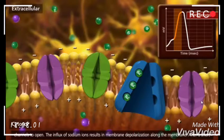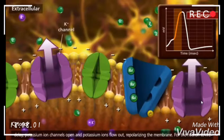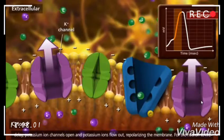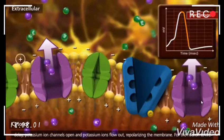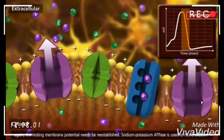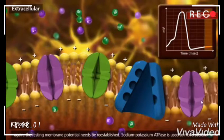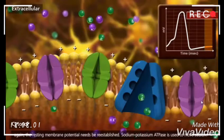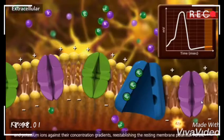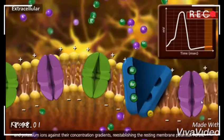The influx of sodium ions results in membrane depolarization along the membrane. After a short delay, potassium ion channels open and potassium ions flow out, repolarizing the membrane. For the neuron to fire again, the resting membrane potential needs to be re-established. Sodium-potassium ATPase is used to move sodium and potassium ions against their concentration gradients, re-establishing the resting membrane potential.